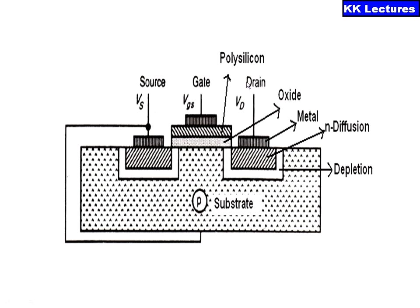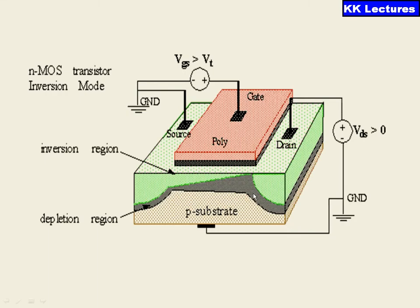An NMOS transistor consists of an N diffusion which is induced into a p-type substrate. If you see here the NMOS transistor in the three-dimensional picture in the inversion mode...